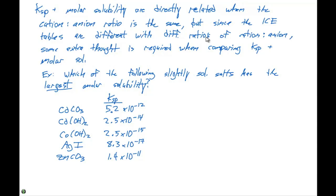Back to the example problem. We have a list of KSPs and we want to know which salt has the largest molar solubility — one of the favorite standardized test questions from the ACS, MCAT, or DAT. Step one for this problem is to group the salts based on cation to anion ratio.